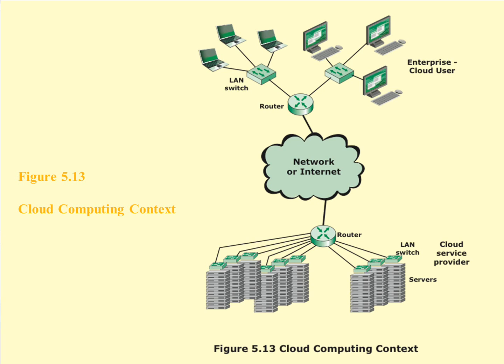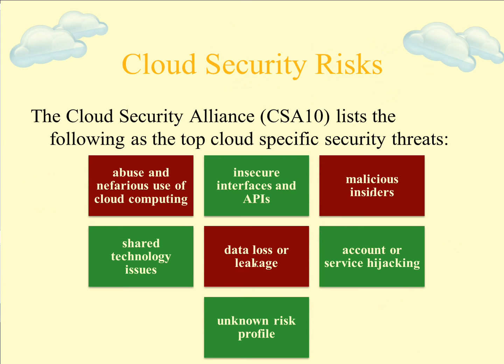The general cloud computing context involves computers going through a local area network, through a router, and ultimately to cloud computers. There are security risks with cloud computing. The top cloud-specific security threats include abuse and nefarious use of cloud computing, insecure interfaces and APIs, malicious insiders, shared technology issues, data loss or leakage, account or service hijacking, and unknown risk profile. Most of these are problems we have with any kind of computing, though cloud computing may escalate them slightly.